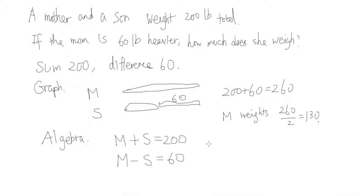You can just add these two equations. If you add M + S, that's 200, and then add M - S, that's 60. This is exactly what we're doing with the picture—we add to get 260.